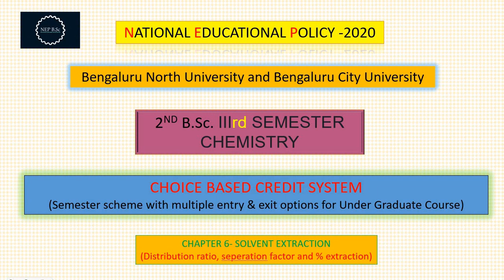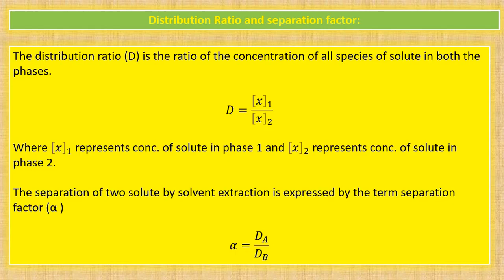First of all, what is distribution ratio? The distribution ratio is the ratio of concentration of all species of solute in both the phases. It is given by D — capital D represents the distribution ratio. Therefore, D is equal to x1 divided by x2.